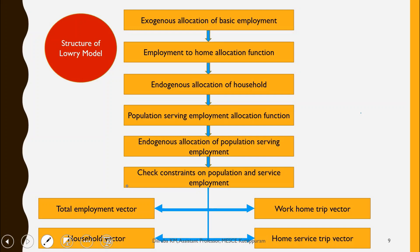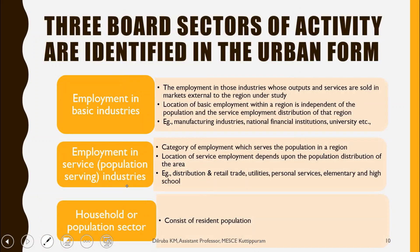The structure of urban areas in the Lowry derivative model involves a work-home trip vector and a household vector related to home service trip vector. There are three broad sectors of activity identified in the urban area. The first is employment in basic industries, whose outputs and services are sold in markets external to the region of study. The location of basic employment within a region is independent of the population and service employment distribution of that area.